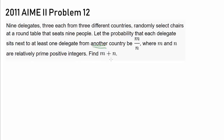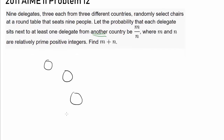Find M plus N. So we have this round table consisting of 9 chairs, and 9 delegates are going to be sitting on these chairs, 1 person per chair.